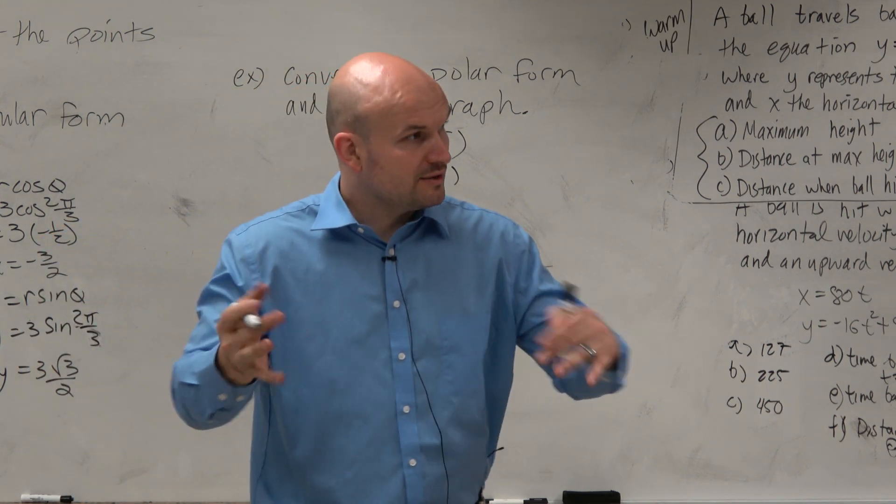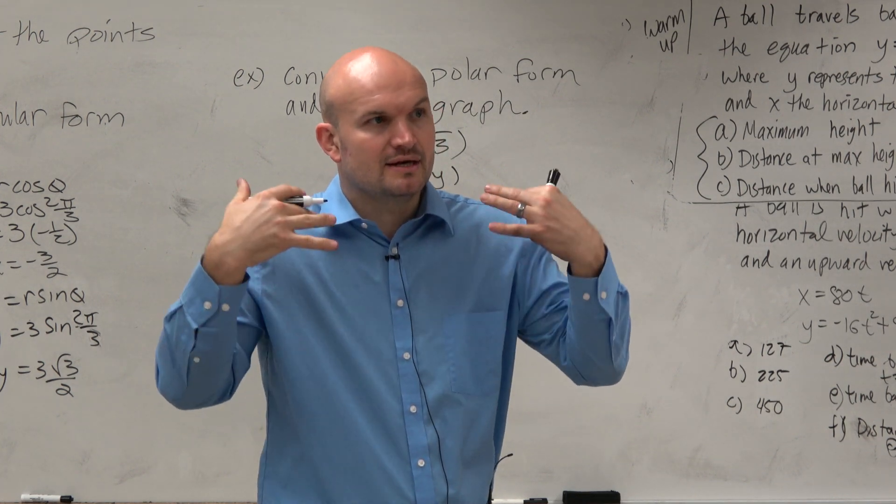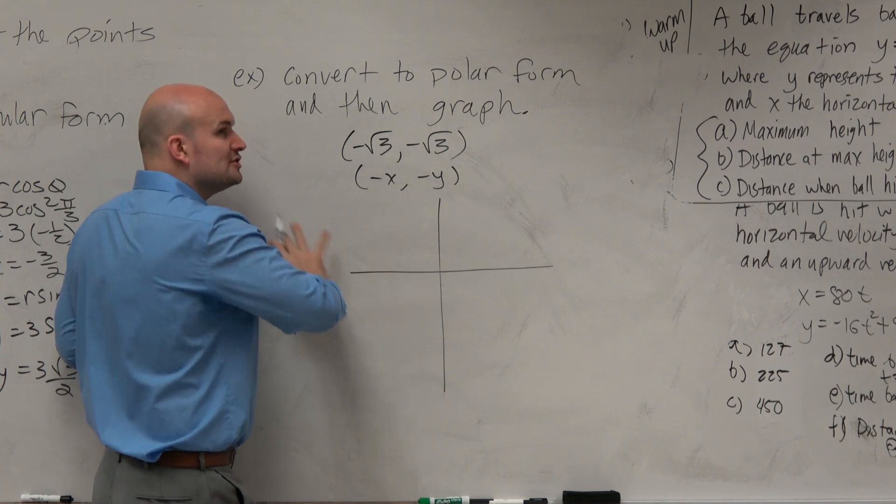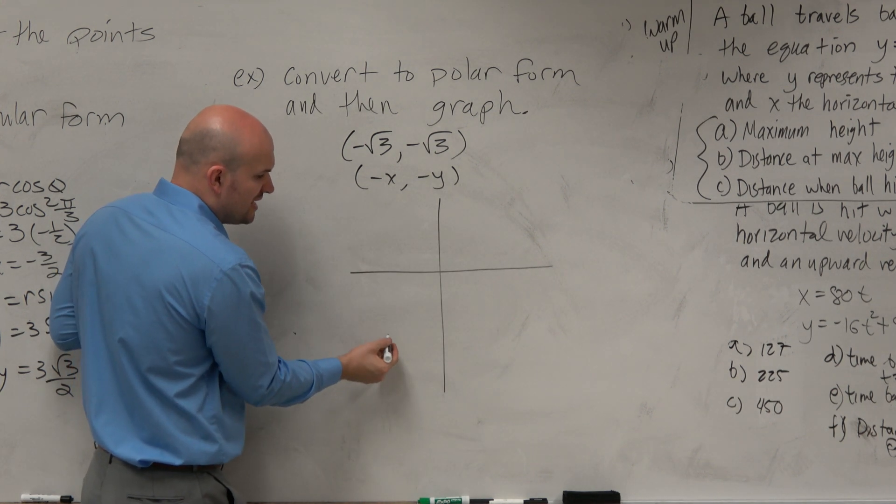So at least we know, we can still go off our understanding of rectangular coordinates and understand that, okay, that's in the third quadrant. That's going to be something down here. Now, to understand how we're going to convert from rectangular to polar, let's just plot a point in the third quadrant.